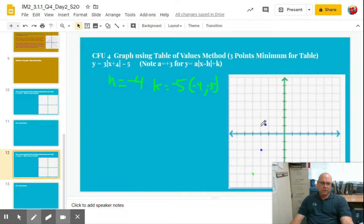Up 3: 1, 2, 3, right 1. Up 3: 1, 2, 3, right 1. 1, 2, 3, right 1. I'm done. Off the graph, right?